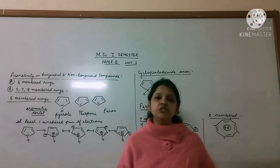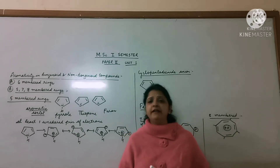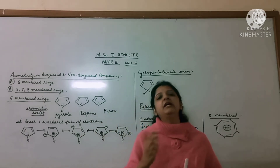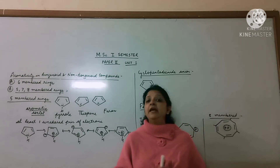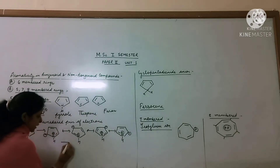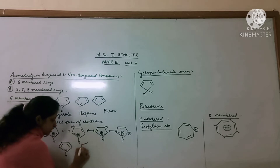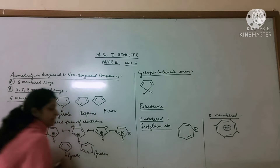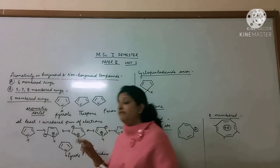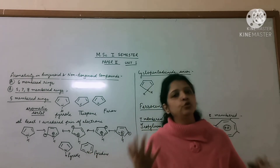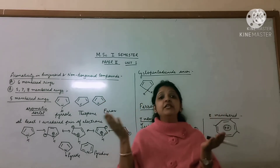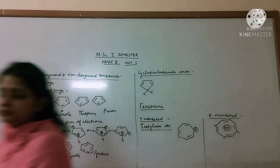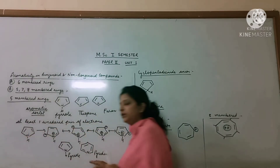Now if we want to define basicity in terms of electrons, it is the tendency to donate electrons. We call it basicity. A common exam question compares pyridine and pyrrole. Pyrrole is much less basic than pyridine. In the case of pyrimidine there are two nitrogen atoms with two lone pairs, so the two basicities should be almost similar, but this is not the case. Pyridine's basicity is more as compared to pyrrole.